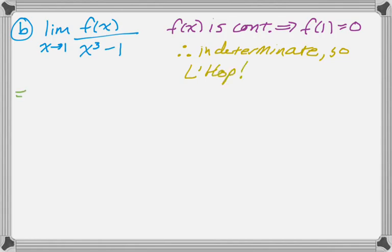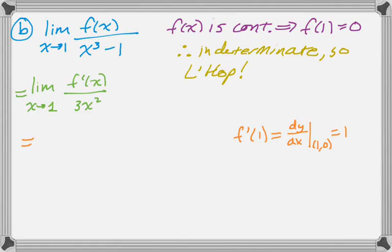That limit that we're given is actually equal to this limit, provided that this limit exists, and this one does. We've already calculated that f'(1) is dy/dx at the point (1, 0), which is 1. So our limit overall becomes one-third. That's all there is to that.